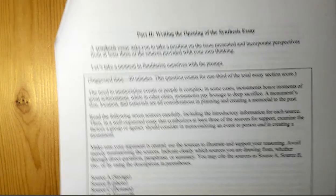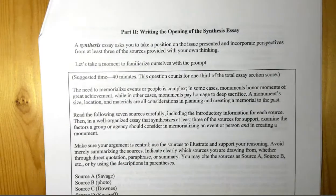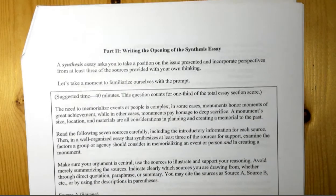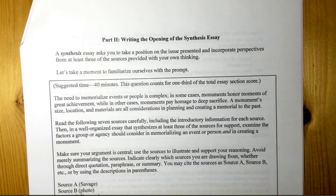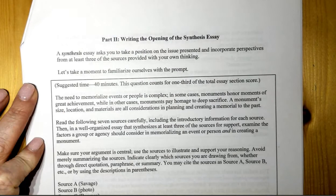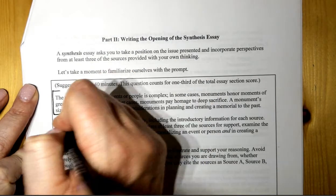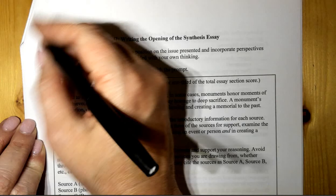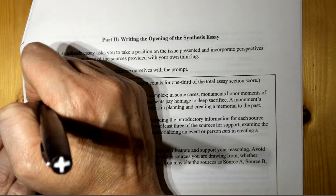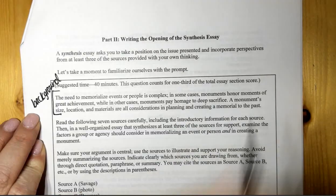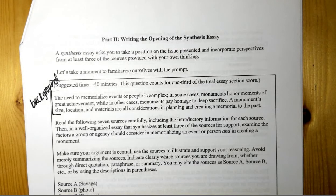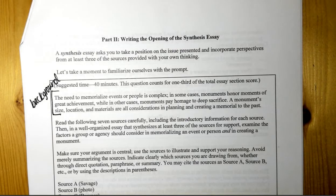All right. All right, let's turn to the next page. So a synthesis essay asks you to take a position on the issue presented and incorporate perspectives from at least three sources to provide you with your own thinking. So I'm going to kind of show you the format of this, all right? So always in the first body paragraph, you're always going to have like background information.